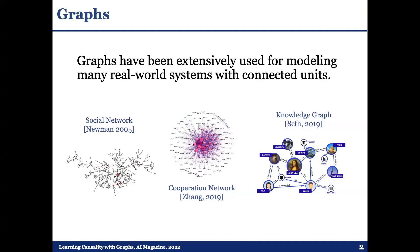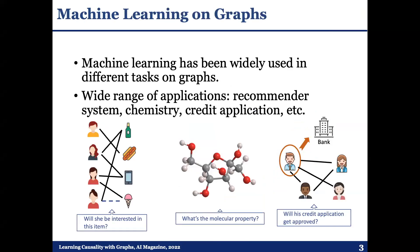Graphs are everywhere in our life, and have been extensively used for modeling many real-world systems with connected units. Currently, there has been a lot of work in machine learning on graphs, such as node classification and link prediction in recommended systems and molecular studies. Most of this work addresses the tasks from a statistical perspective, like utilizing the correlations between node features, graph structure, and labels for classification.